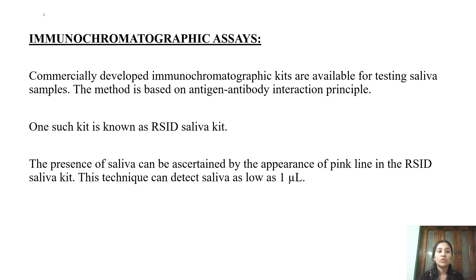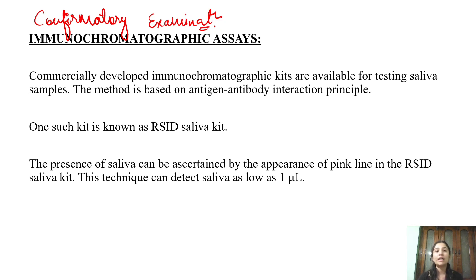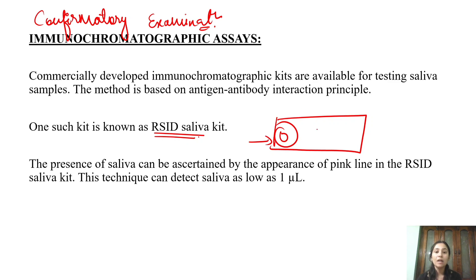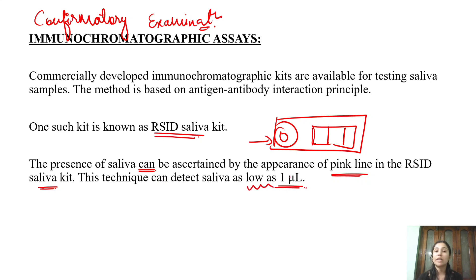Next we will talk about confirmatory examination. The commercially available kit we use is the RSID Saliva Kit. It works through an antigen-antibody reaction. If saliva is present in your sample, you will get a positive reaction in both the test zone and control zone, indicated by a pink line. The technique can detect saliva at concentrations as low as 1 nanoliter.